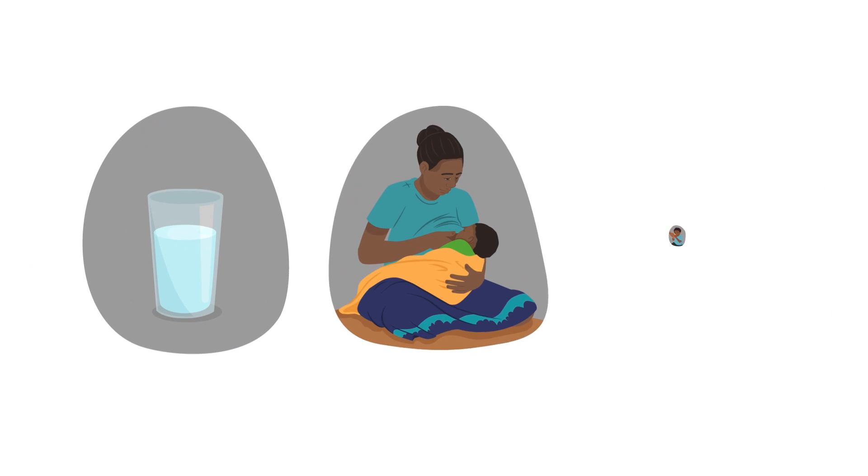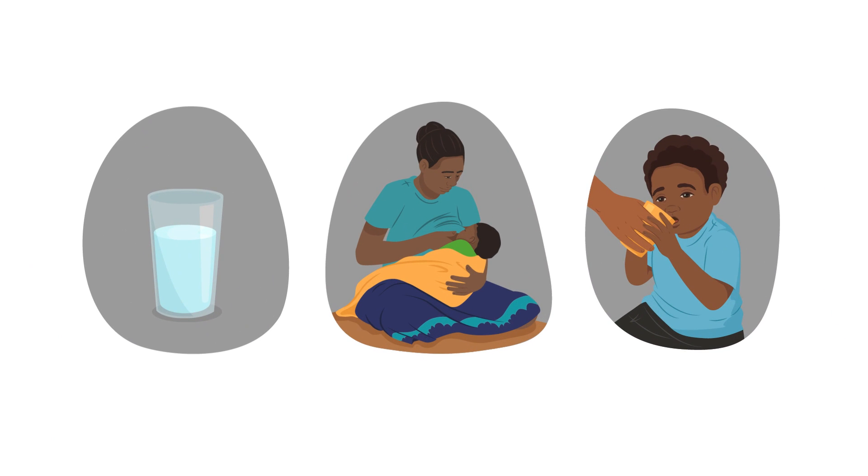Giving water, breast milk and other liquids to a child with diarrhea helps to prevent dehydration.